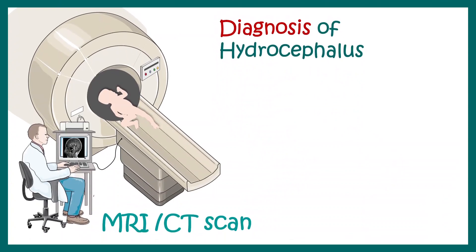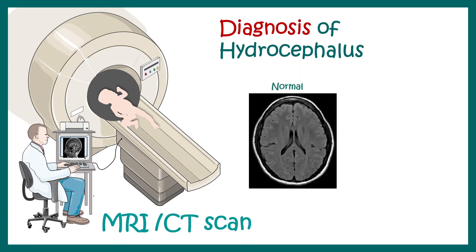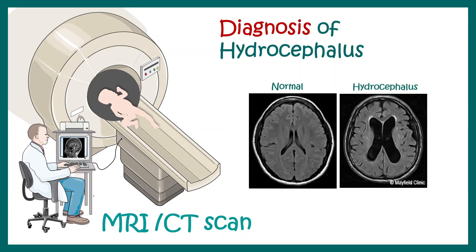Hydrocephalus can be diagnosed using MRI or CT scan. After birth, overall head size gives some indication, but confirming the diagnosis and understanding changes in ventricular volume or problems in the choroid plexus requires MRI or CT scan. Here is how a normal brain looks compared to a hydrocephalus brain under MRI.